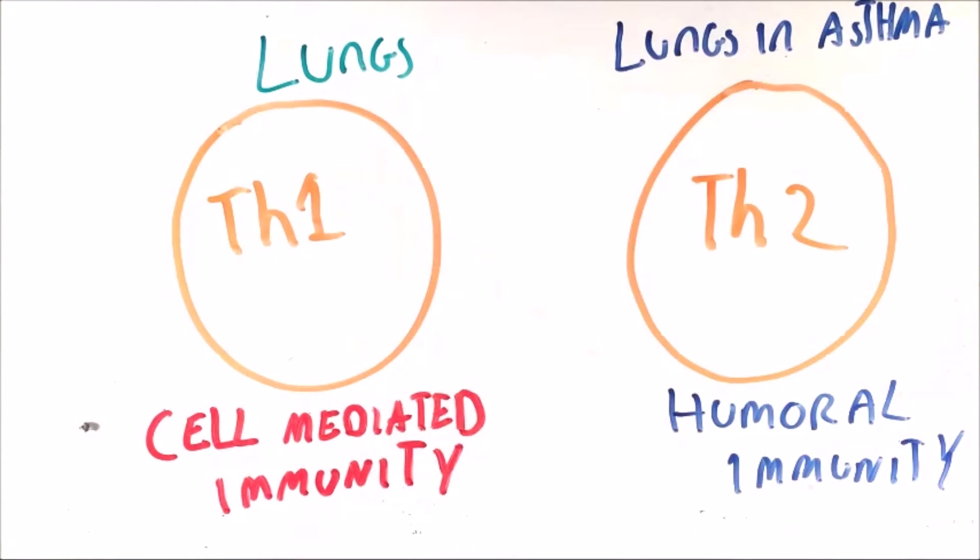Type 1 is often found in the lungs, however in asthma both can be found in the lungs as type 2 is upregulated. What does this all look like when somebody is having an asthmatic attack?